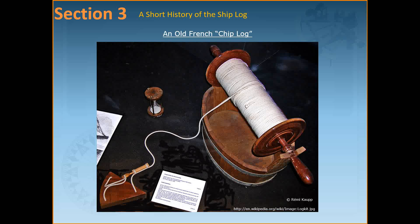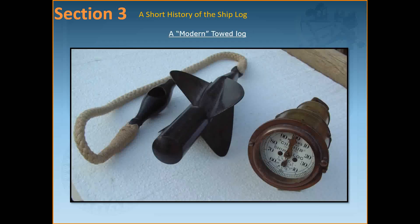Over time it was not easy to continue with that system, so a modern towed log was introduced in the 19th century. The log chip was replaced by a towed rotor or propeller connected by a line to automatic speed and distance measuring equipment. This log used a pitot tube, named after Henry Pitot who invented it, which projected through the bottom of the ship.